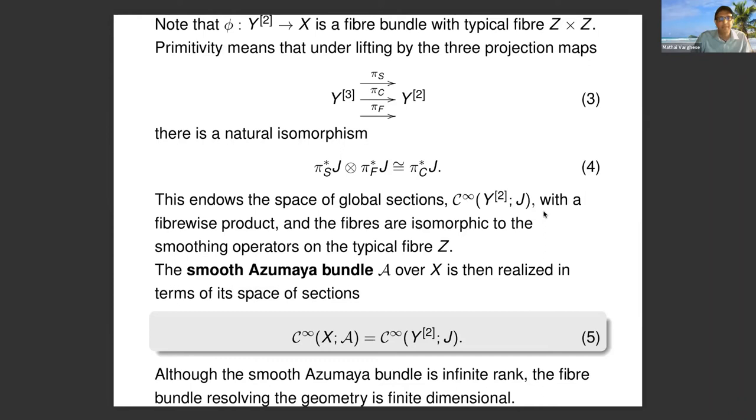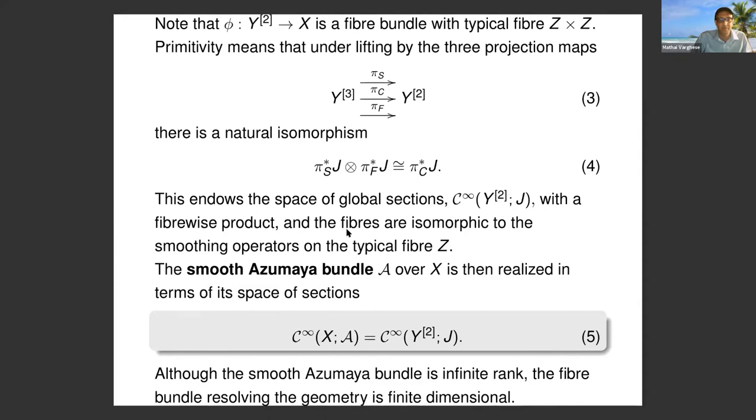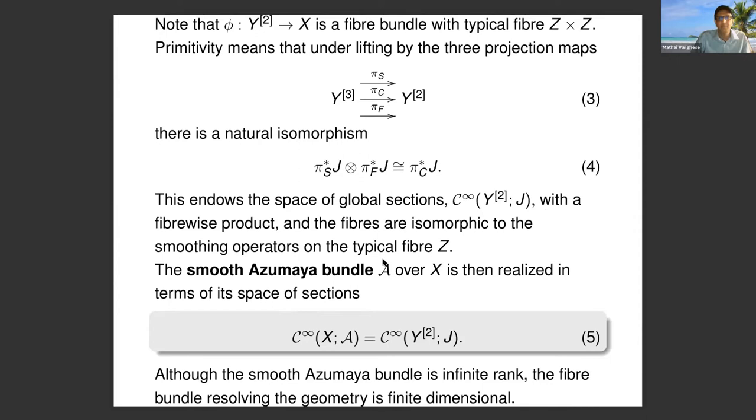Michael Murray studied this a lot. What happens is this allows the space of sections of J, which is a line bundle over Y squared with this primitive property, to have a fiberwise product. The fibers are isomorphic to smoothing operators on the typical fiber Z.